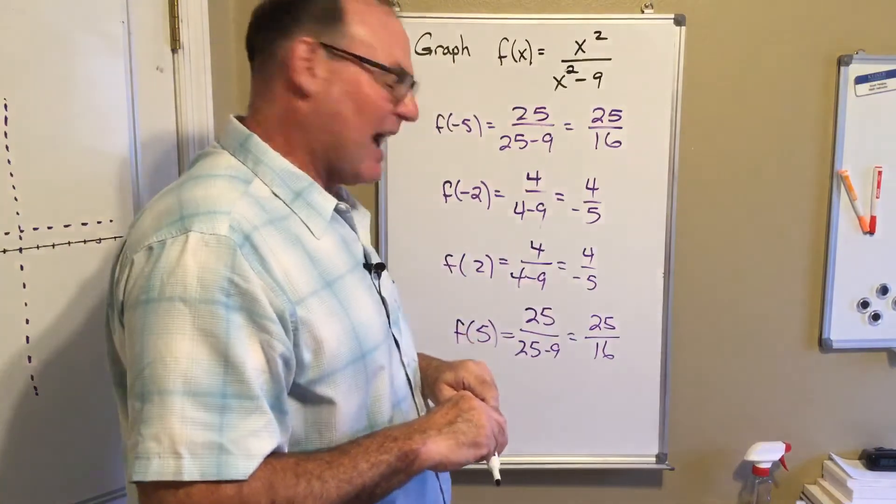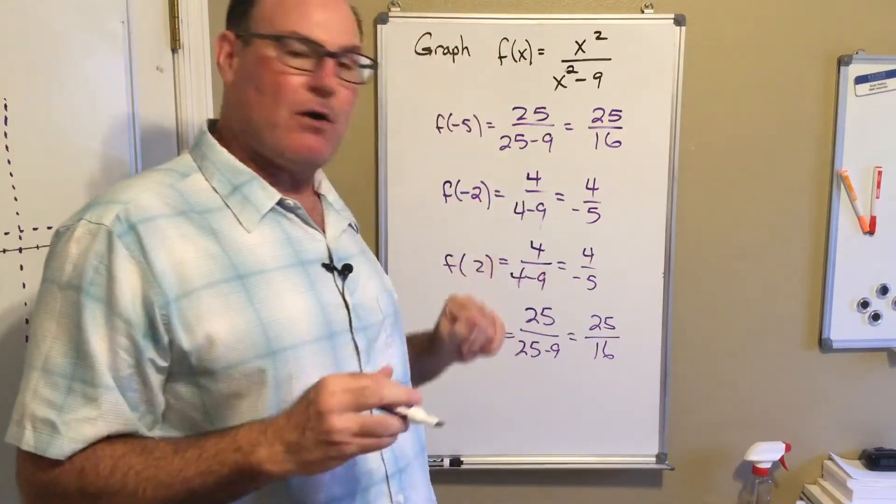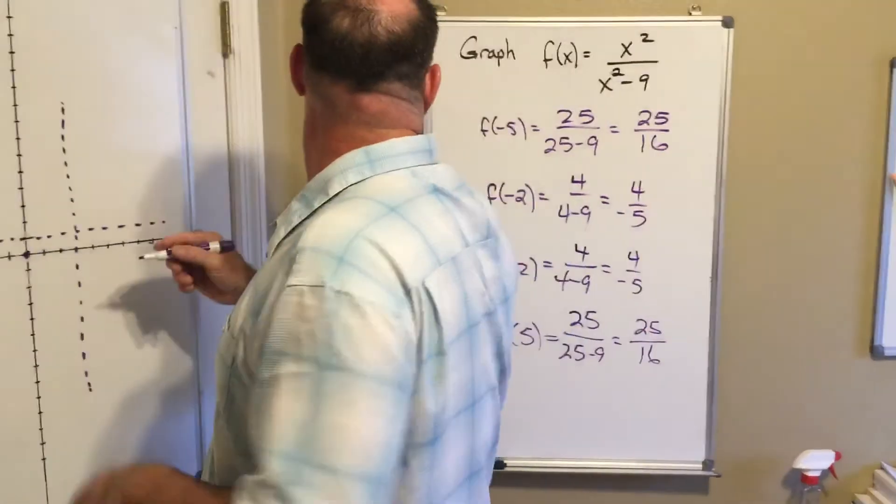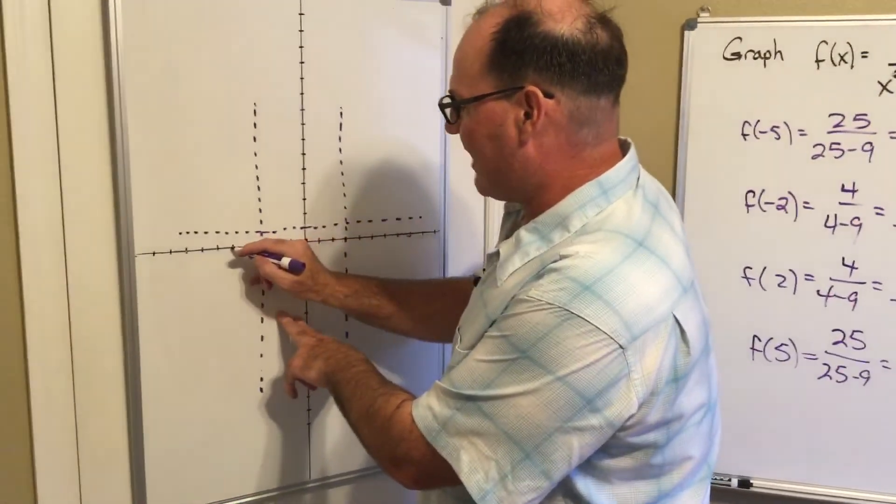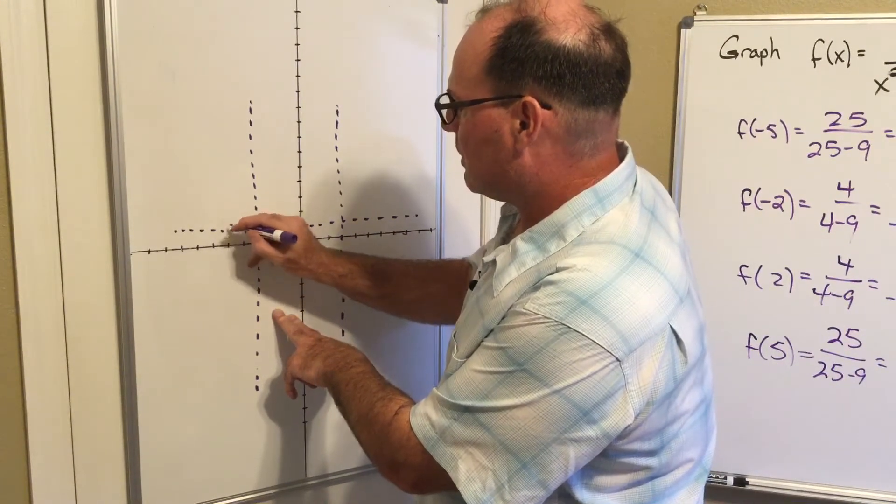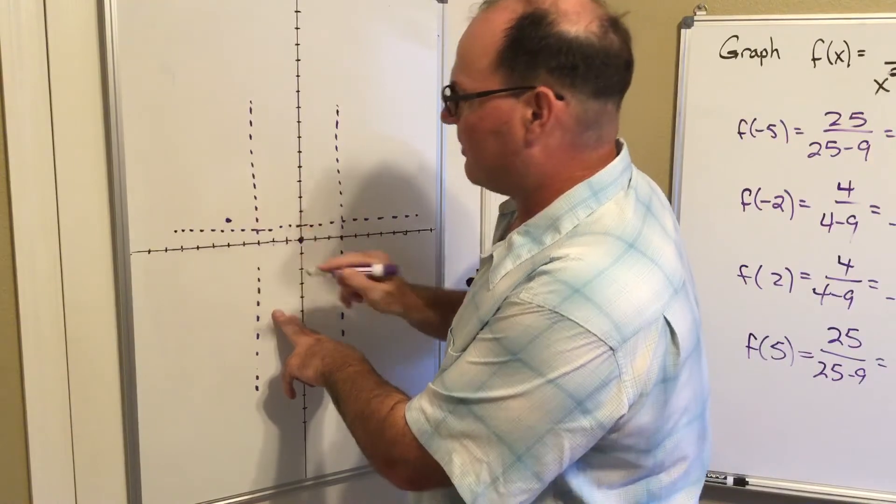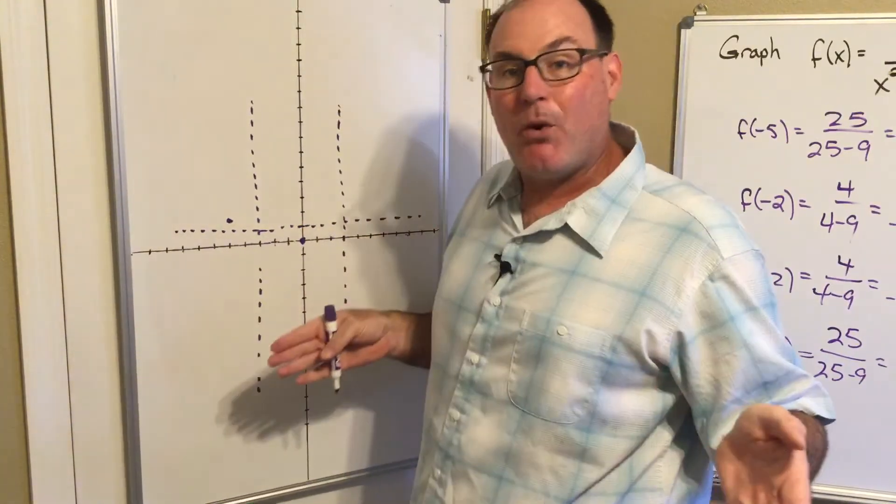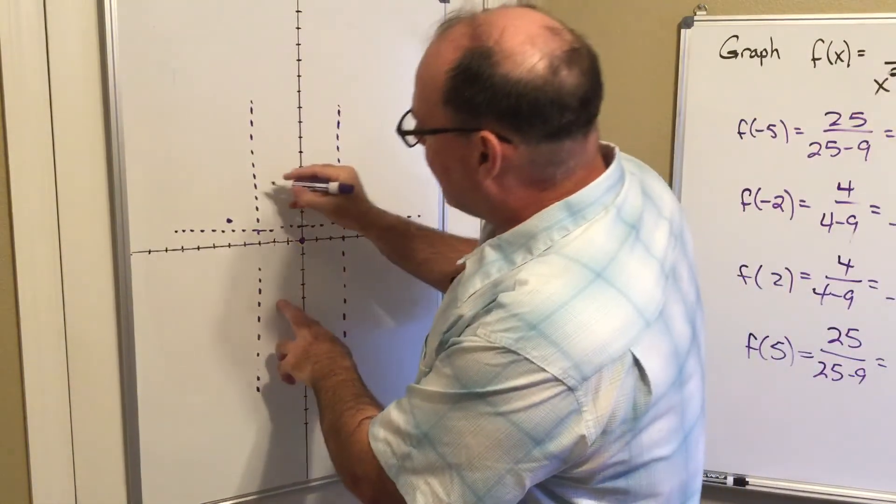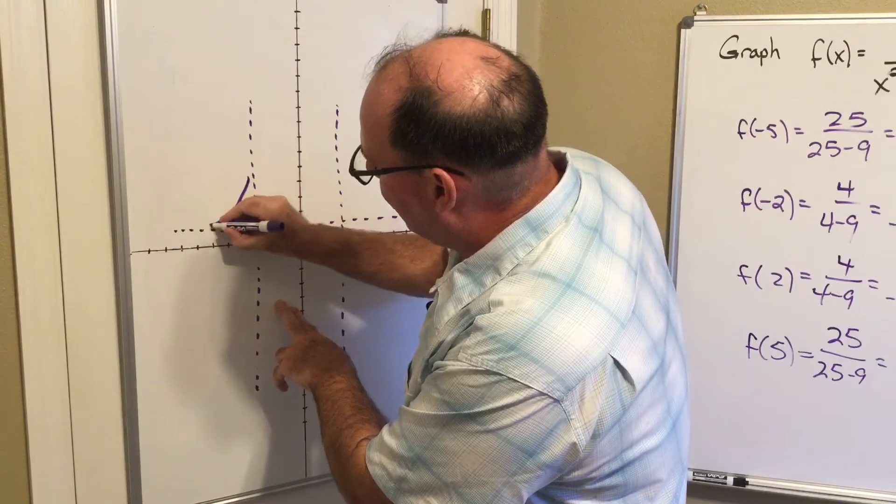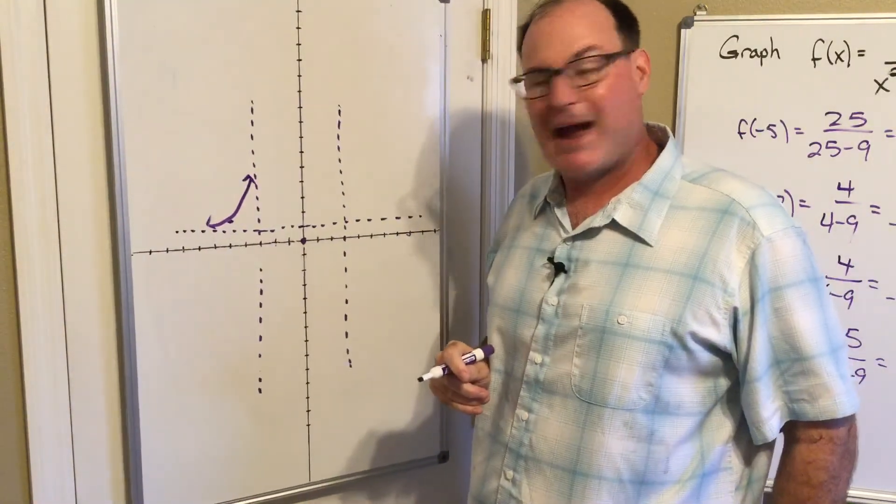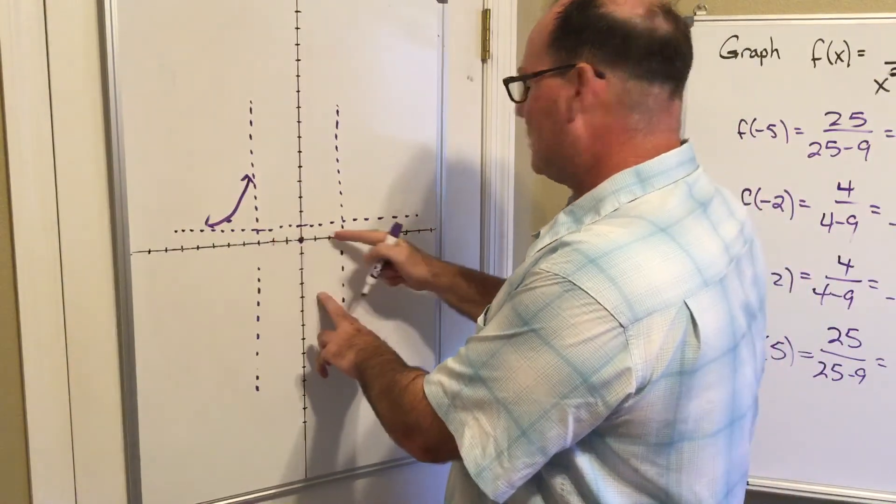Okay, so we're just about done. I'm going to come over here. My values - when I plugged in negative five, I got 25 over 16, so one and almost another half again. If you need more points, get more points. You got plenty of time, we're all kind of in isolation right now. What I'm going to do now is just complete this graph by using the asymptotes to shape the behavior of the graph.